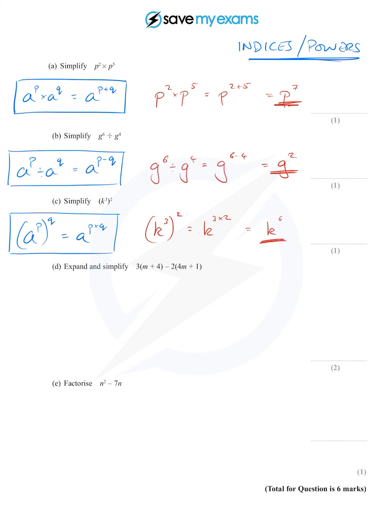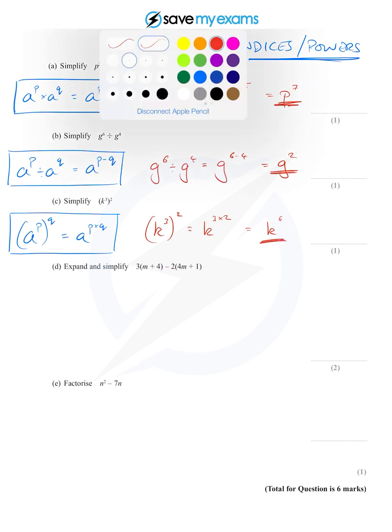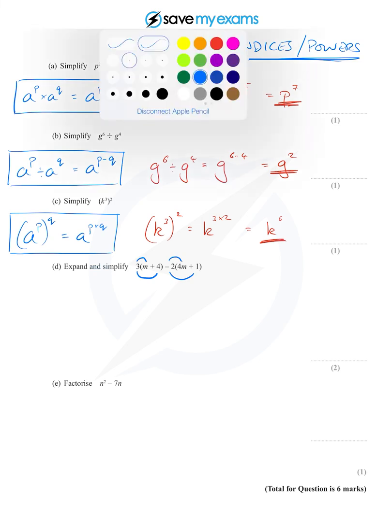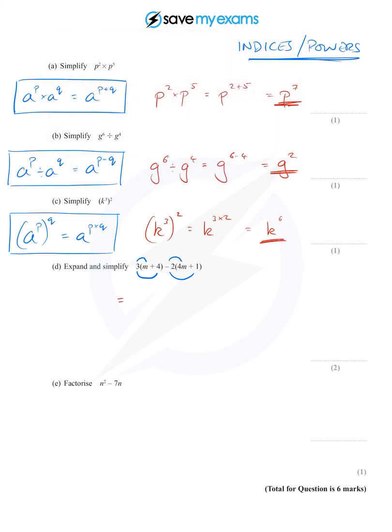Right, now we've done the powers, what's next? For part d, expand and simplify. Looks a little bit like two brackets but there's a minus sign in the middle, so it's just two lots of one bracket. For the first one we do whatever's outside, the three times the m and then the three times the four. For the second one we'll do the minus two times the four m and the minus two times the one. Just be a little bit careful here because of that minus sign. But the first one's easy: three times m is three m, three times four is 12.